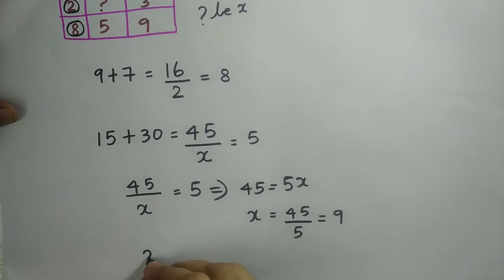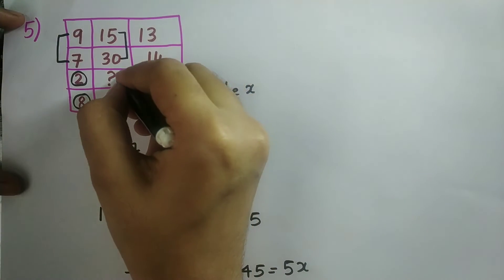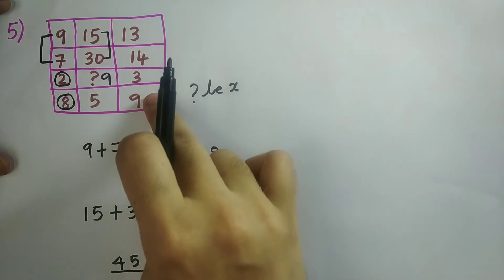So therefore, x is equal to 9 is the answer. So in the place of question mark, I should write 9.